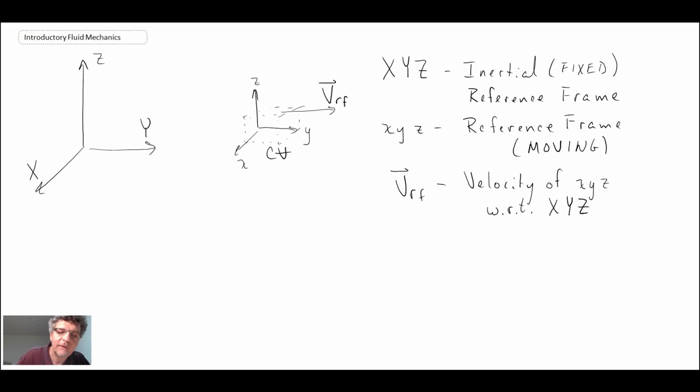So what we have here, we have an inertial reference frame, and that is shown to the left. So this is our inertial reference frame shown over here. And then we have a reference frame that is moving. And within that moving reference frame, that is where our control volume is located. And the velocity at which the reference frame is moving is Vrf. So that denotes the velocity of the reference frame.